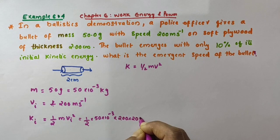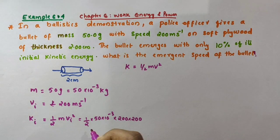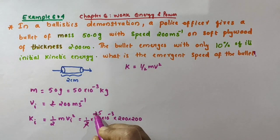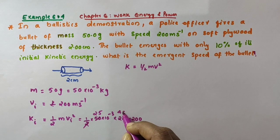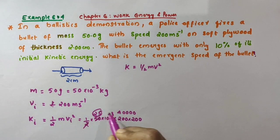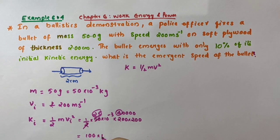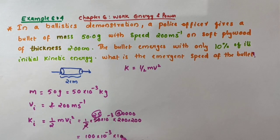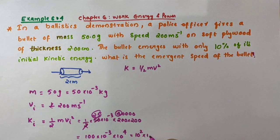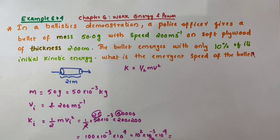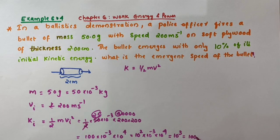That is 200 × 200 = 40,000. So we have ½ × 50 × 10⁻³ × 40,000. This gives 25 × 10⁻³ × 40,000 = 25 × 40 = 1000, accounting for the powers of ten: 10⁻³ × 10⁴ = 10, and 100 × 10 = 1000. So the initial kinetic energy of the bullet is 1000 joules.